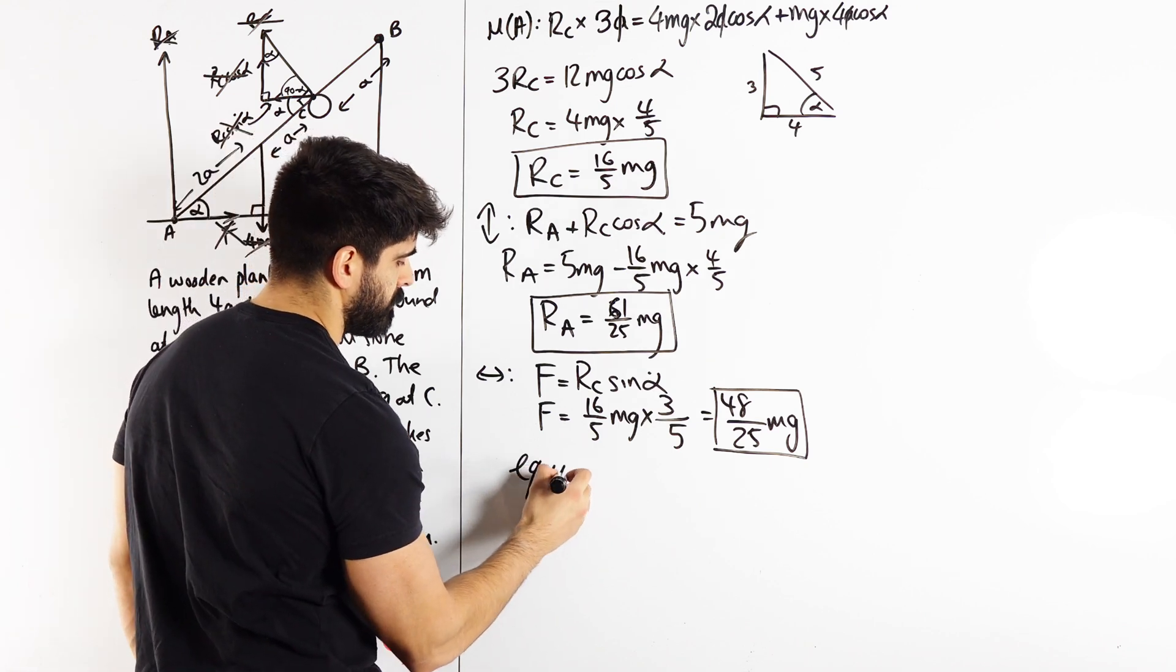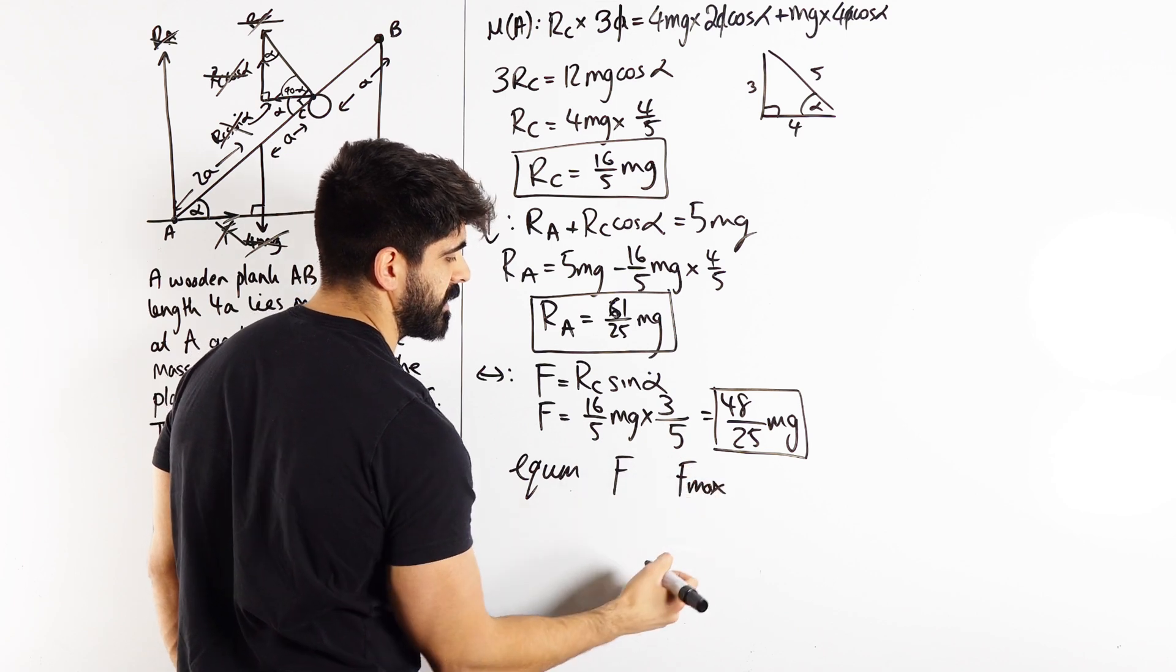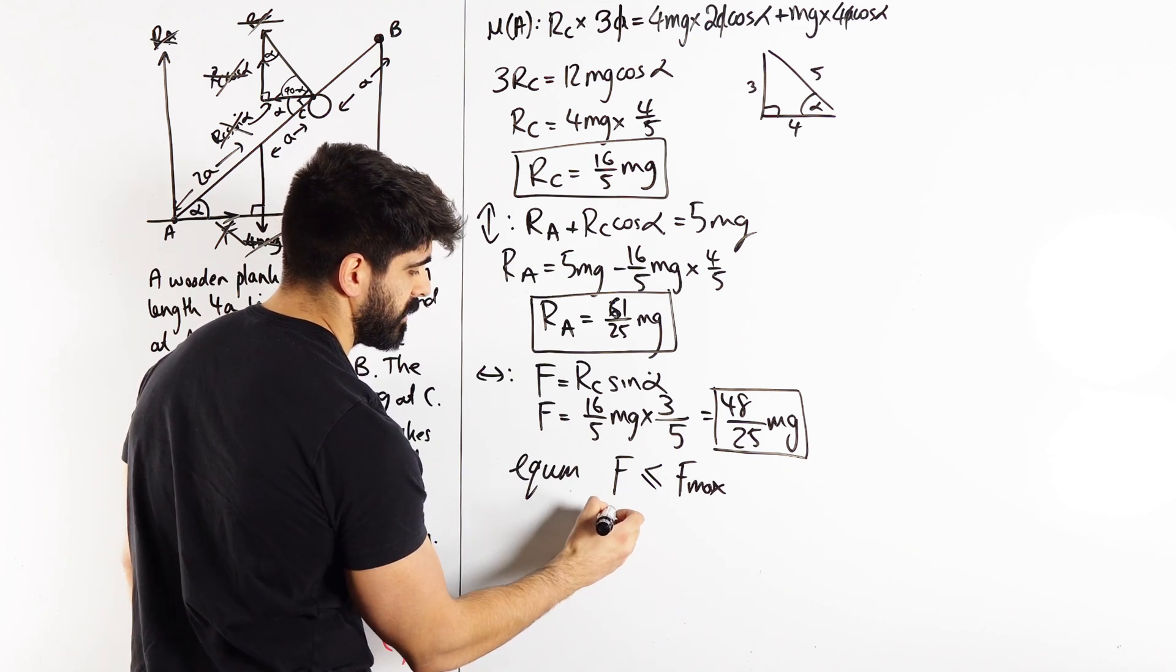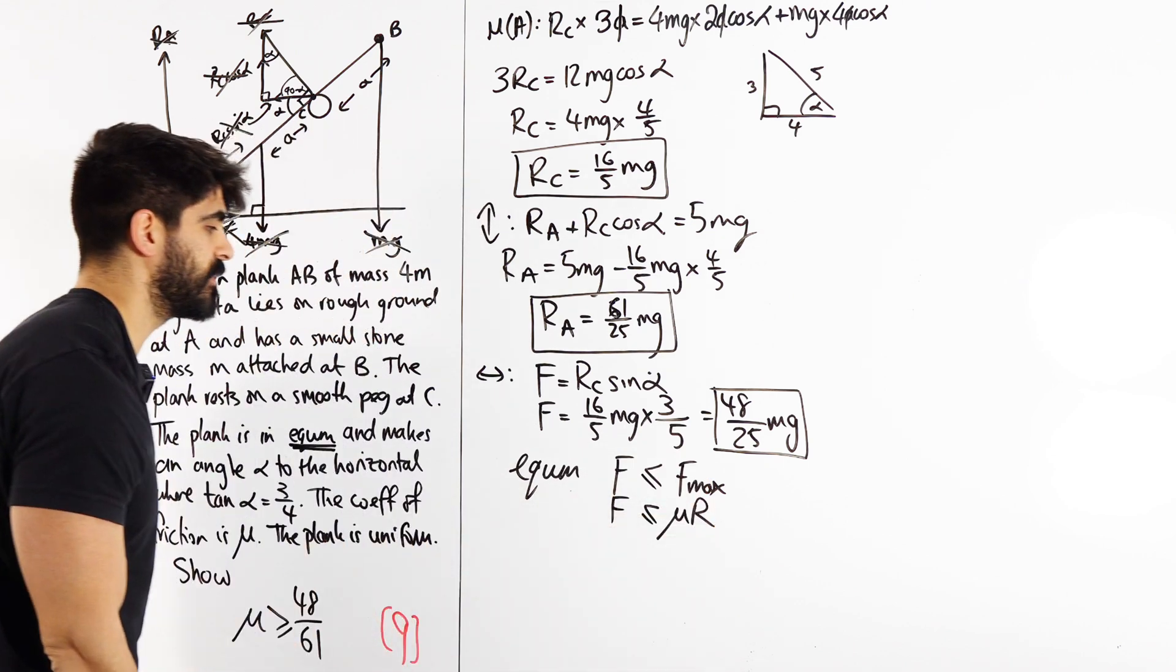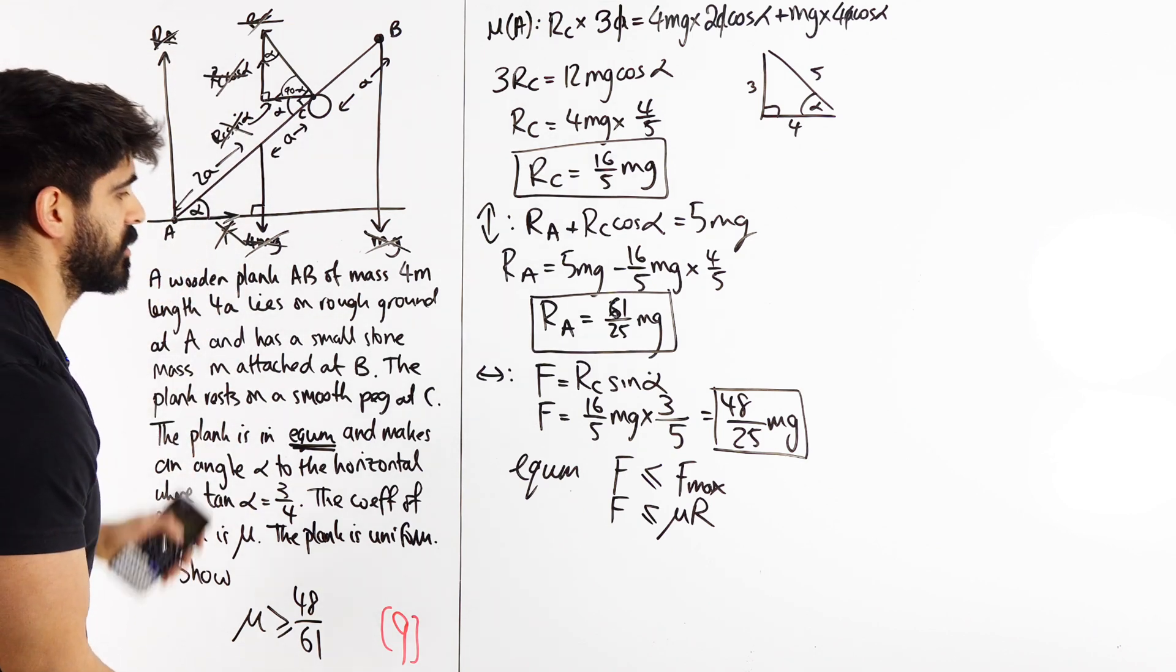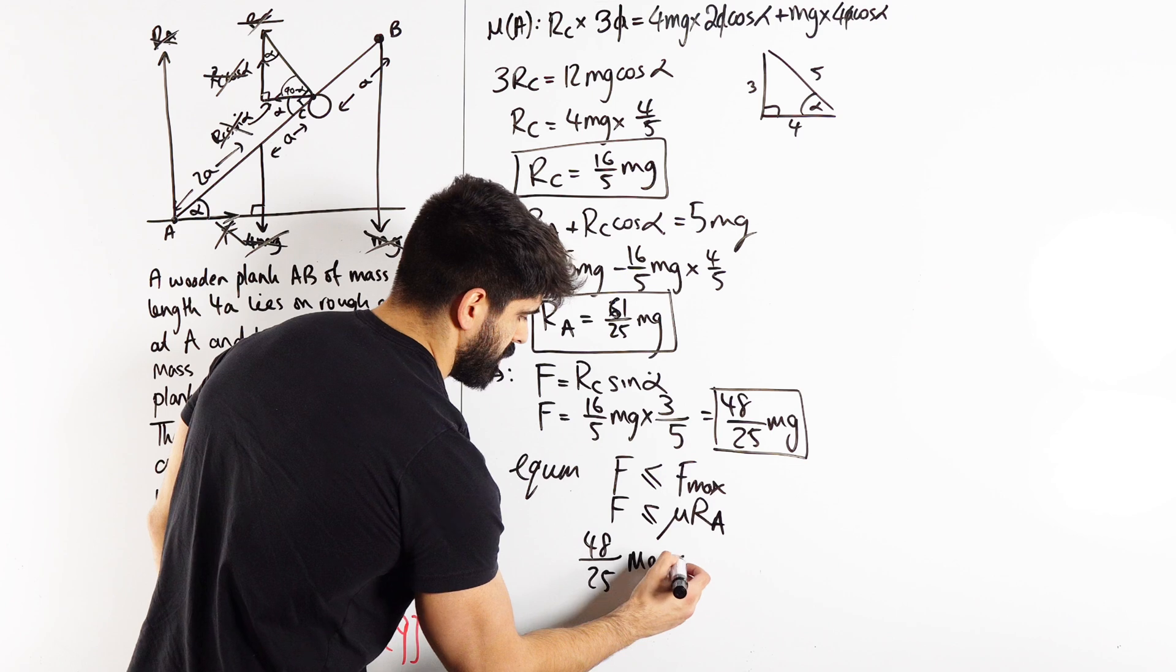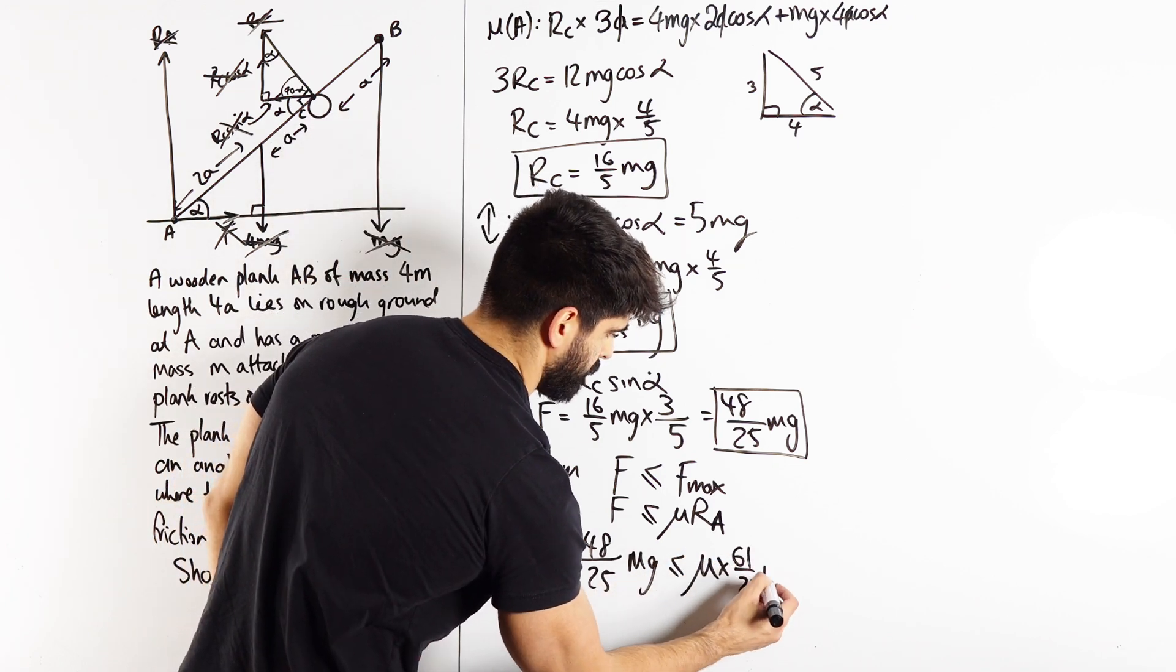Now we can consider F not necessarily being at its maximum cos we're in equilibrium. In equilibrium, F could be equal to F max if it's limiting equilibrium, but generic equilibrium means it's less than or equal to F max. Yeah, it could be smaller. So then we're going to say friction is less than or equal to mu R. Now which R is it specifically? Is it RA or RC? Well F is to do with the contact force at A, so it's RA.